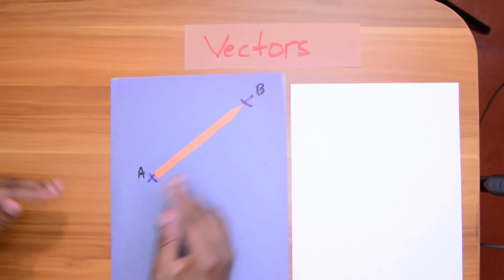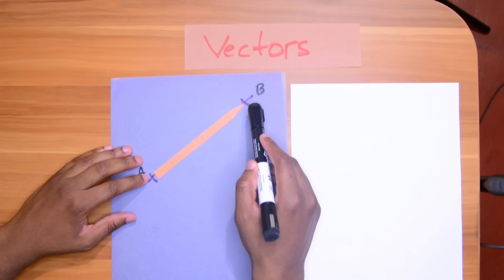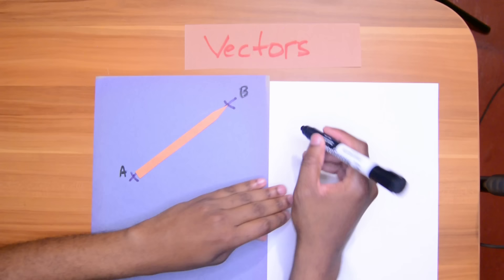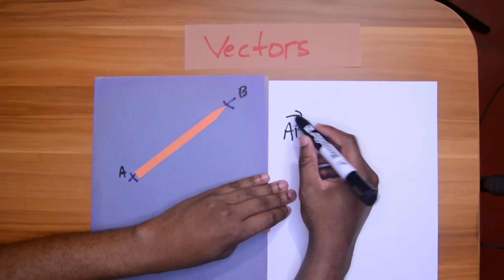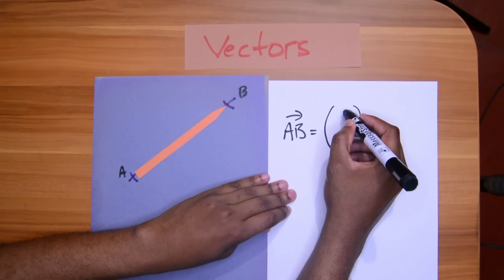And then go up 4. So that means AB, and this is how we write vectors, AB from A to B, arrow, is equal to (5, 4).